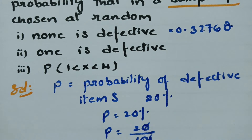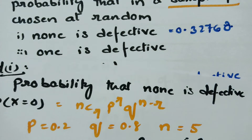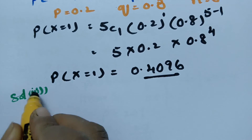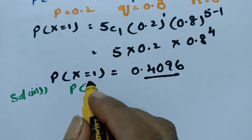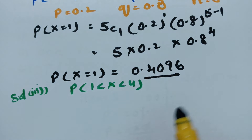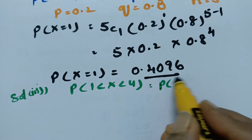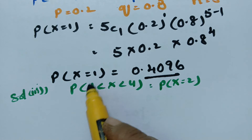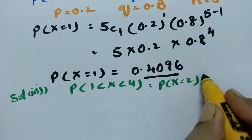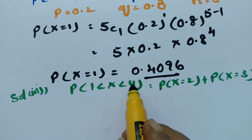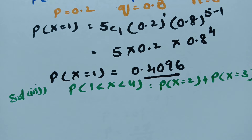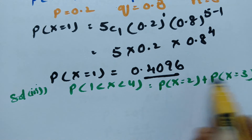For solution 3, we find the probability of 1 less than x less than 4. This means x equals 2 and x equals 3, since x is greater than 1 and less than 4. So we need to find probability of x equal to 2 plus probability of x equal to 3, using r equal to 2 and r equal to 3.